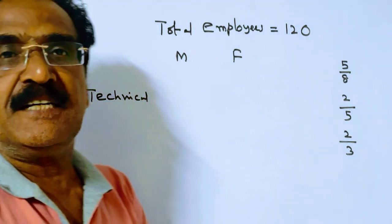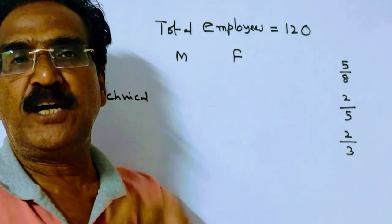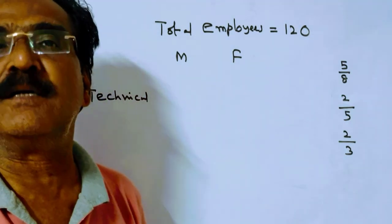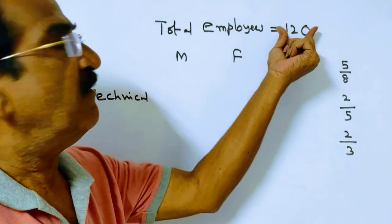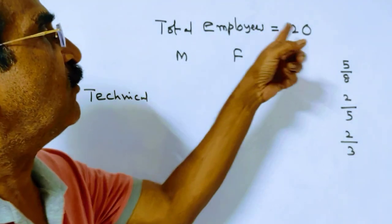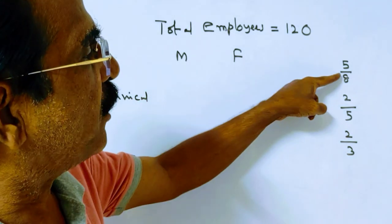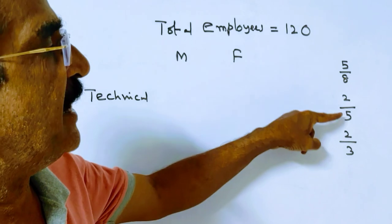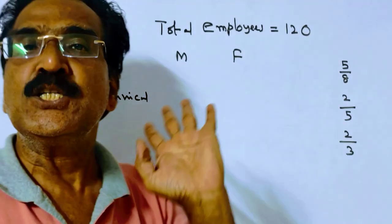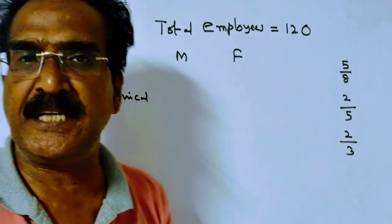See friends, in an office, 5 by 8 employees are males. Say the total number of employees is 120. Friends, this 120 is the LCM of denominators 8, 5, 3. LCM of 8, 5, 3 is 120. So they say the total number of employees is 120.